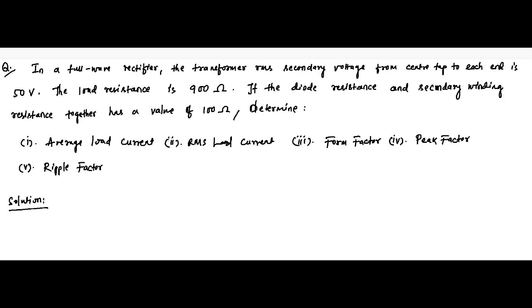Here is another question on full wave rectifier. It is given that in a full wave rectifier, the transformer RMS secondary voltage from center tap to each end of the secondary winding is 50 volts. The load resistance is 900 ohm, and the diode resistance and the secondary winding resistance combined together has a value of 100 ohm. We have to determine the average load current (DC value), RMS load current, form factor, peak factor, and ripple factor.